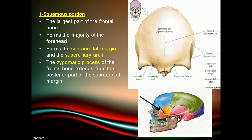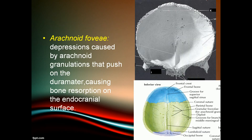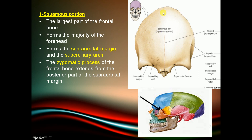The frontal bone has three parts: the squamous portion, the orbital portion, and the nasal portion. The squamous portion is the largest part and forms the majority of the forehead. It forms the supraorbital margin, and the zygomatic process of the frontal bone extends from the posterior part of the supraorbital margin.